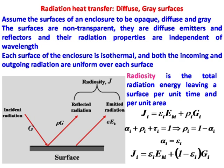If the surface is black, epsilon would be equal to 1; otherwise it is epsilon times e_b. Radiosity is therefore defined as rho·g plus epsilon·e_b. So, epsilon_i·e_b_i plus rho_i·g_i equals j_i, with dimensions of watts per meter squared.